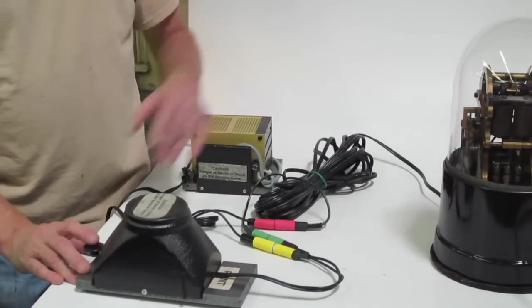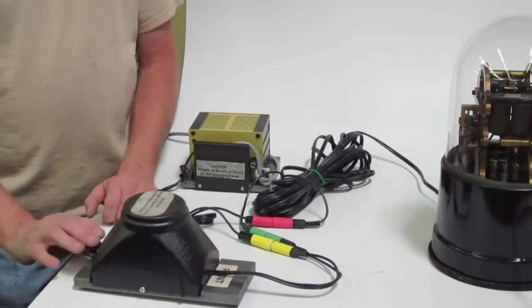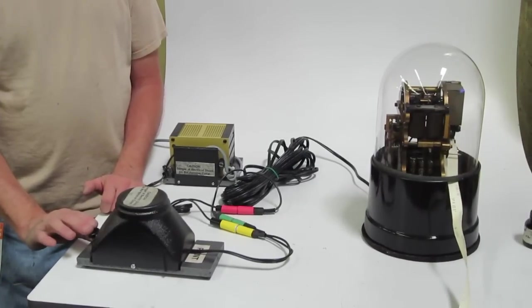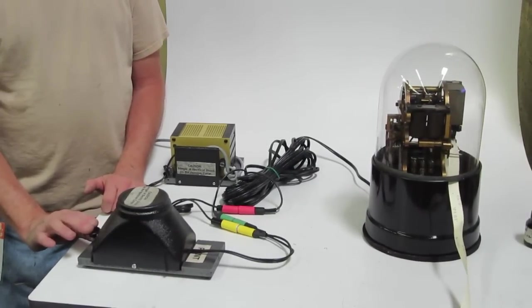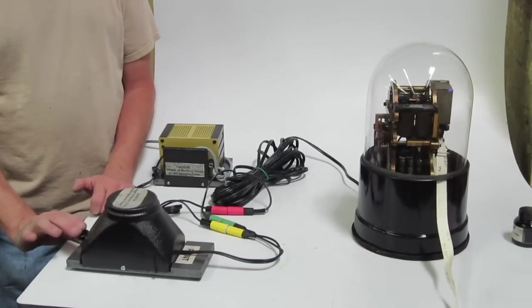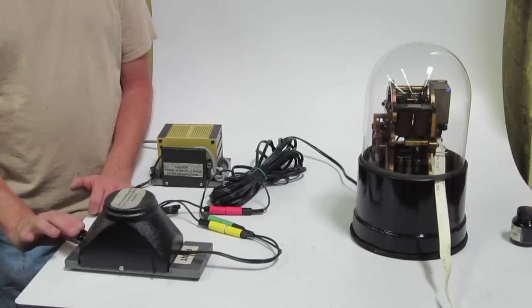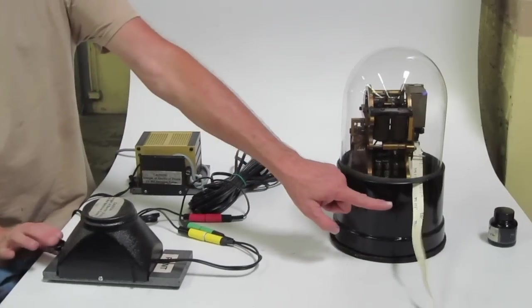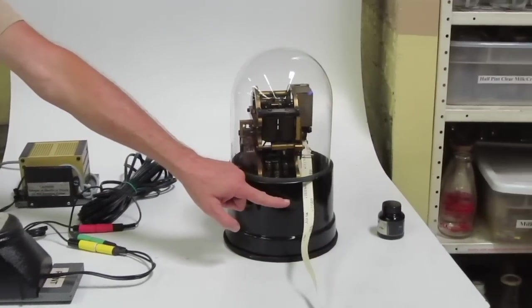To operate the machine, you just simply hit the key. And the speed at which you hit the key changes the speed of the machine. And you can see where the fresh ink has just started to hit right there.